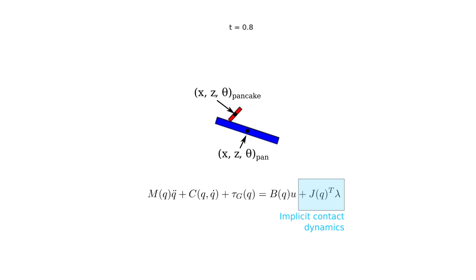This additional term maps the contact forces lambda, which are determined implicitly by the optimization solver, into generalized forces in the configuration space via the Jacobian J of each contact point.